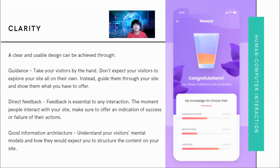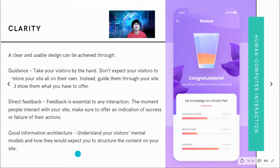Additional ways to achieve a usable design include guidance — take your visitors by the hand, don't expect them to explore your site all on their own; instead, guide them through your site and show them what you have to offer. Also, direct feedback is essential to any interaction. The moment people interact with your site, make sure to offer an indication of success or failure of their actions — for example, when a user enters an invalid credential during login. Finally, good information architecture: understand your visitors' mental models and how they expect you to structure the content of your application.